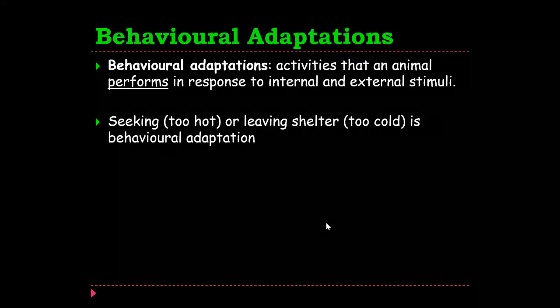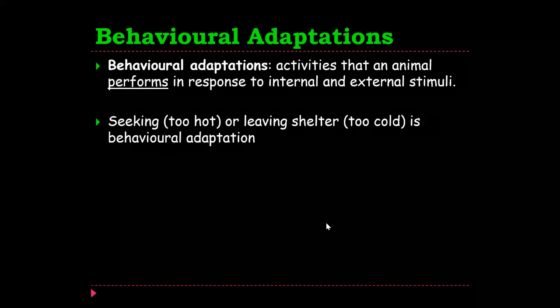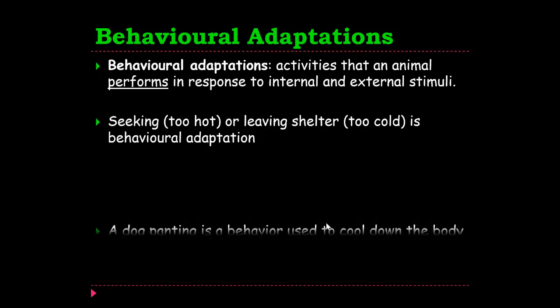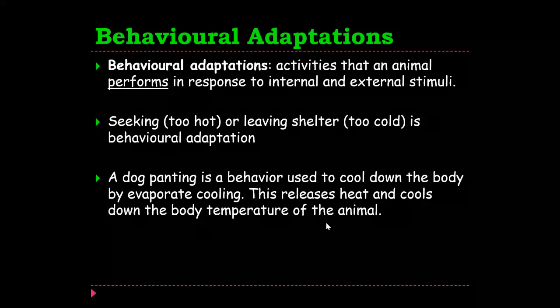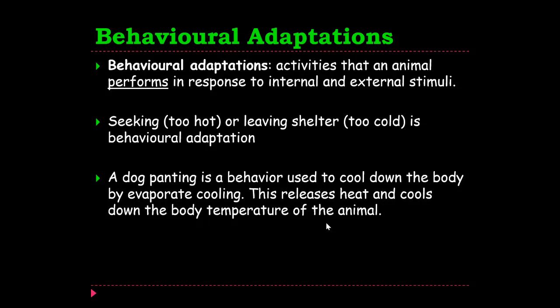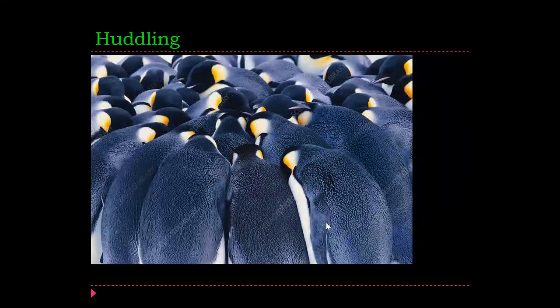Likewise, if it's very cold, cold-blooded animals in particular — reptiles, snakes — will find heat. They'll find a hot rock to lay on and soak up as much of that heat as they can in order to keep themselves alive and well. That is behavioural adaptation. A dog panting — the method of panting is to cool down the body by evaporative cooling. By allowing the heat from the dog's mouth and tongue to evaporate off, it cools down the body temperature of the dog — which is again a behavioural adaptation.